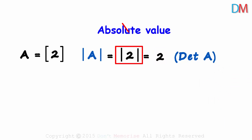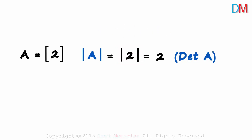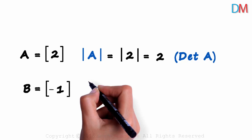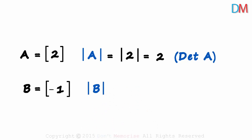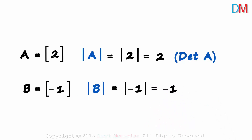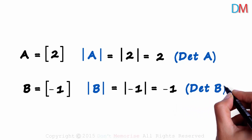Do not misinterpret it as the absolute value of 2. Next question: what will be the determinant of matrix B? The determinant of B is written like this, and it will equal the determinant of minus 1. The determinant of a one by one matrix is equal to the element inside it, so it will equal minus 1. That's the determinant of matrix B.